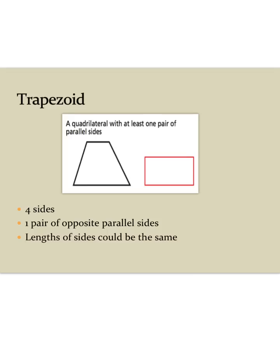A trapezoid is a weird looking shape. It has four sides, and it has one pair of opposite parallel sides. Sometimes these lengths could be the same. So if we take a look, first of all, that is not a trapezoid, but this is. And it's a weird shape, and see this top and this bottom? They are parallel.